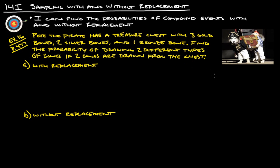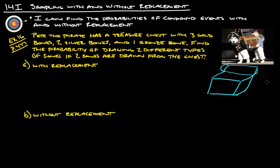So let's draw a little picture of the pirate chest. Here is our pirate chest. We have three golds — gold, gold, gold — two silvers — S, S — and then one bronze.